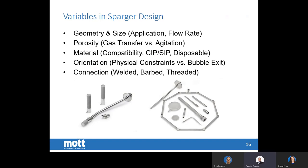At Mott, we have developed several different shapes and sizes of spargers to meet customer applications through custom design work. Geometries include pipes, tubes, discs, and an octagon sparger designed for specific applications. Most spargers are 316L stainless steel, but other alloys are available when required. You typically want the sparger in a horizontal position to minimize bubble size. Connection types include MPT thread, welded fitting, barbed fitting, tri-clover, or quick-connect fitting.